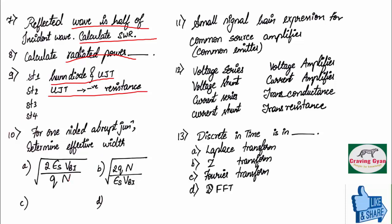We know 1 by N effective which is equals to 1 divided by NA plus 1 divided by ND. For this, option number A is correct. Effective width W equals to under root of 2 epsilon S VBI divided by Q times of N effective.